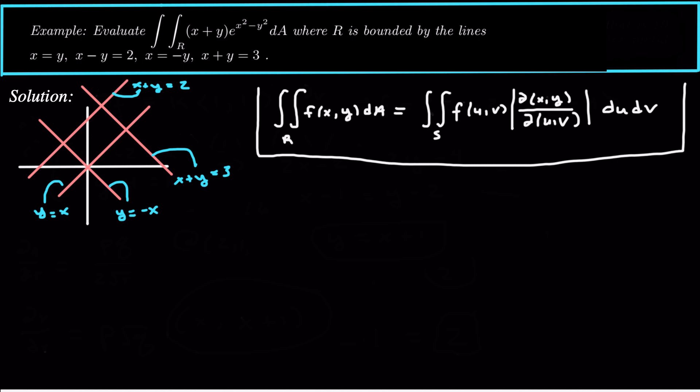Today we're looking at evaluating a double integral: the integral of (x plus y) times e to the (x squared minus y squared) dA, where r, the region of integration, is bounded by the lines y equals x, x minus y equals 2, y equals negative x (or x minus y equals 0), and x plus y equals 3. This region of integration is actually pretty complicated. If we tried to do a double integral over this region directly, we'd have to split it into three separate double integrals to add together, which is not much fun.